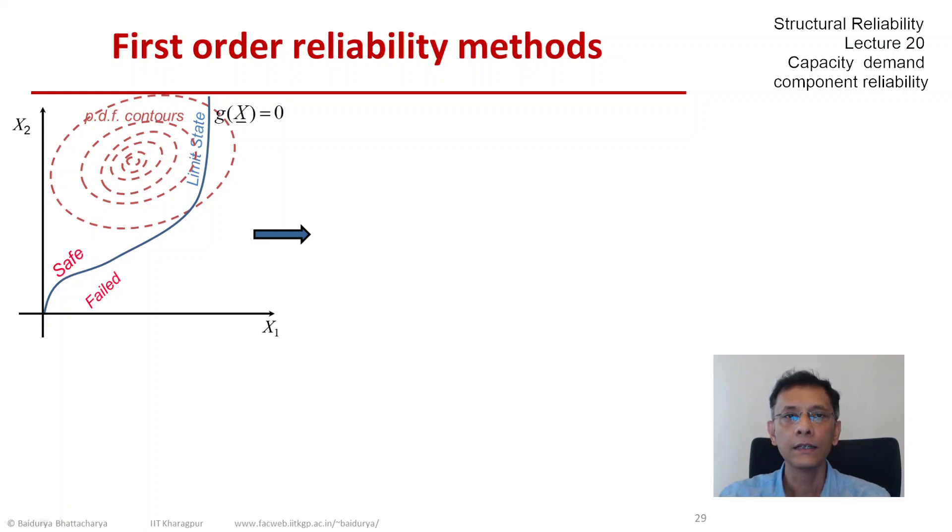This is what the map t does to the limit state and to the probability density function in the new space.